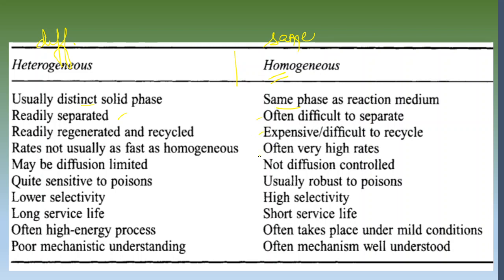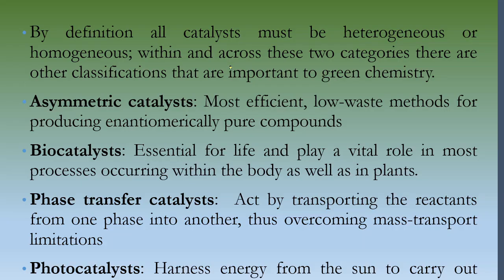With heterogeneous catalysts, you can readily separate them, whereas homogeneous catalysts get mixed into the reaction medium and are difficult to separate, and recovery is more expensive. Homogeneous catalysts give very high reaction rates and are usually robust to poisons, while heterogeneous catalysts are quite sensitive to poisons and therefore have lower selectivity. Homogeneous catalysts have high selectivity and operate under mild conditions. Based on all these factors, you decide whether to use a heterogeneous or homogeneous catalyst.